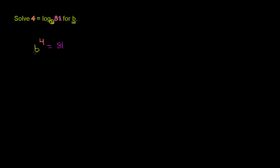So you just have to think, what number do I have to multiply by itself four times in order to get 81? And 81 might jump out at you - it is a perfect square. We know that 9 times 9 is equal to 81.